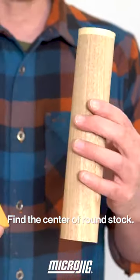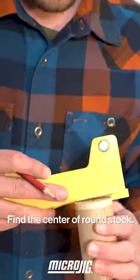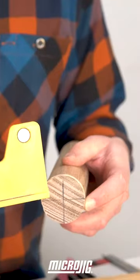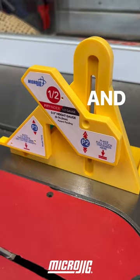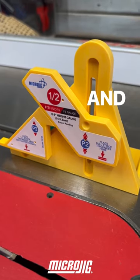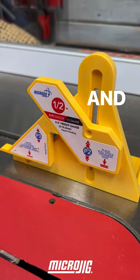Find the center point of round stock, draw two opposing lines, and you have the center of that stock. So that's the Micro Jig Fit Finder. Check it out. Easy to use, makes me not do math.